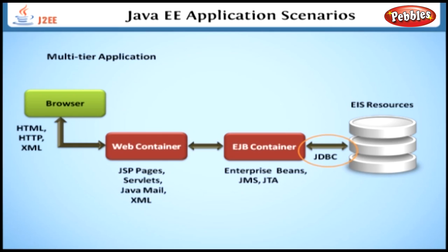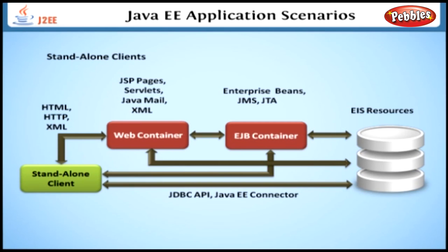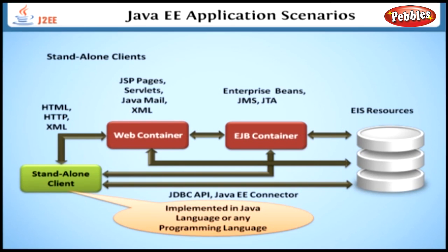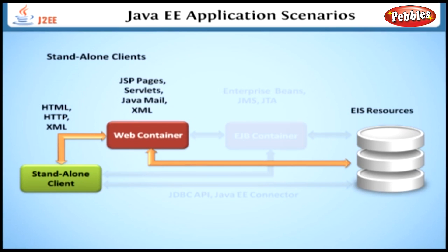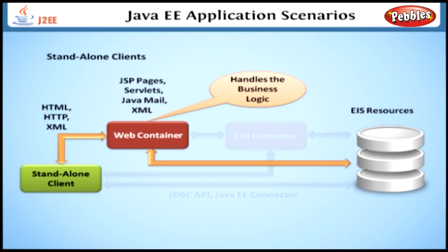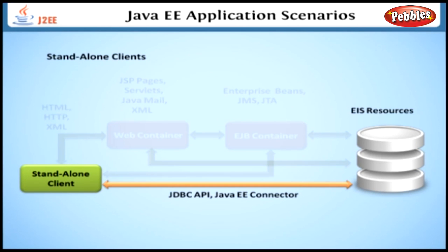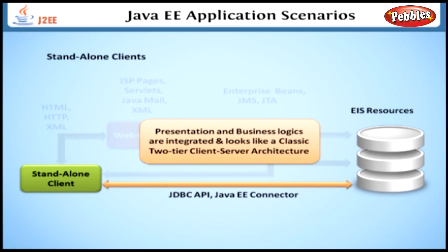Let's look at the application scenario which uses the standalone client. Standalone clients can be implemented in the Java language or in any other programming language. They can access EIS resources through the web container, where the presentation logic will be in the client tier and the web tier handles business logic. Normally, business logic is implemented as enterprise beans due to the advantages of the rich enterprise beans component model. Standalone Java application clients can also access EIS resources directly using JDBC APIs or Java EE connectors, where presentation and business logic are integrated into a single application — similar to a classic two-tier client-server architecture.